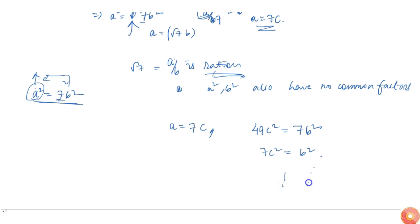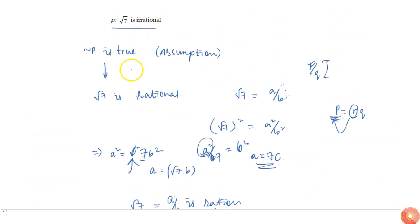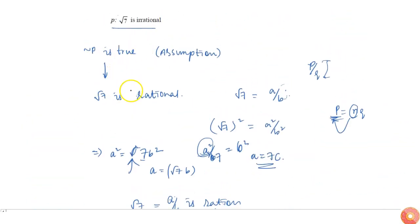This chain must end somewhere with all the 7s cancelled on both numerator and denominator. So that means this thing is a contradiction—there should not be any extra 7 coming out. So that means this is a contradiction, and that means √7 is not rational, that means √7 is irrational.